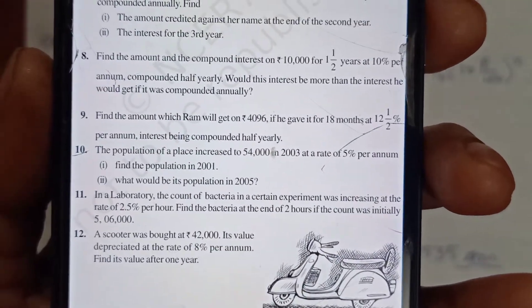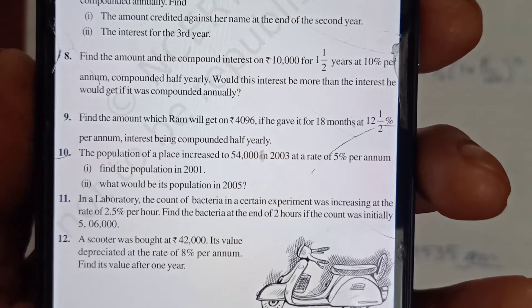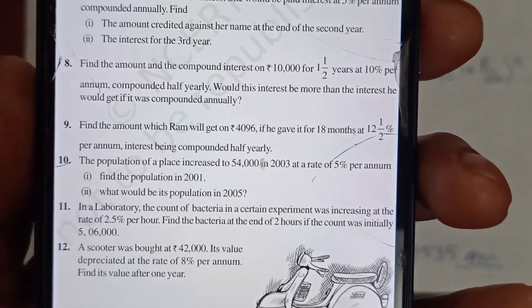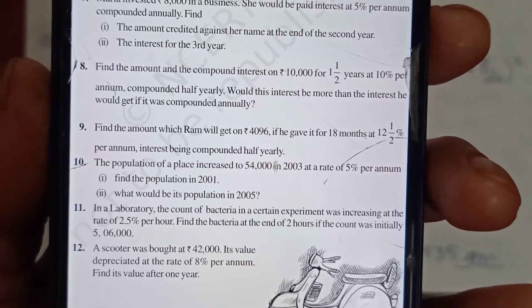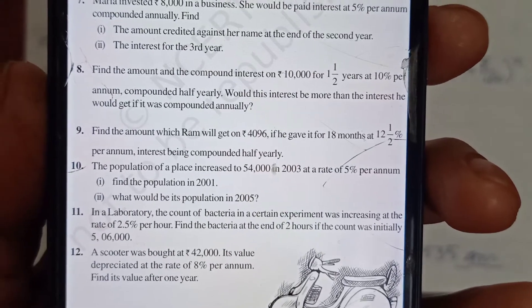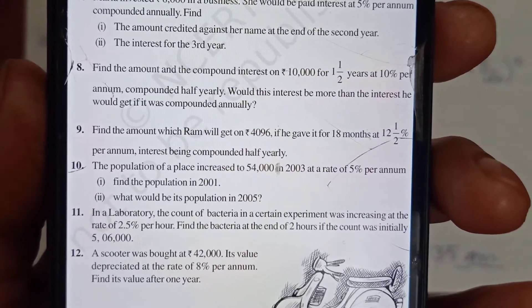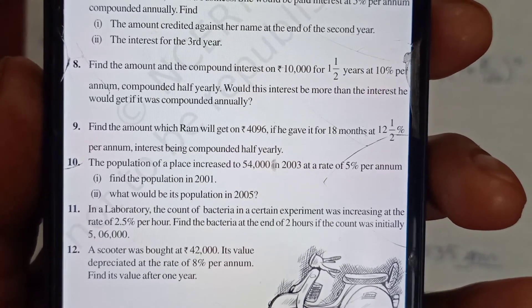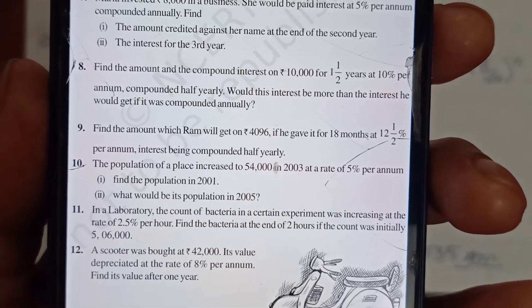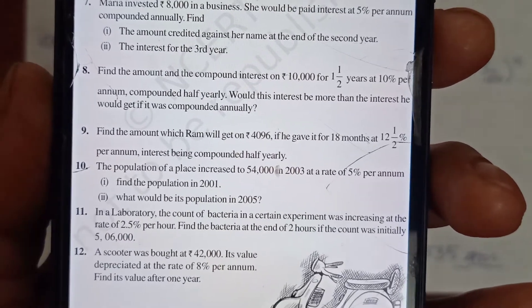Question 9: Find the amount which Ram will get on ₹4,096 if he gave it for 18 months at 12.5% per annum compounded half-yearly. 18 months is equivalent to one and a half years. Half-year is six months, so three times interest. N will be 3. 18 divided by 12 is 3/2 years; doubling it, n equals 3.